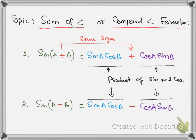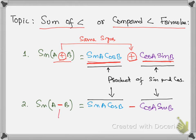Sum of angle or compound angle formula — this is Formula No. 1: sine(A+B). This means sum of angle or compound angle A+B, and this formula can be expanded as a product of different functions. We have the same signs: if we have a positive sign here, this sign will be the same. The product of the functions will be different — meaning sine and cos. When expanding, first check the sign: if we have a negative sign here, then this sign will be negative. Same signs, different function products — this is the way to learn these formulas.